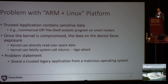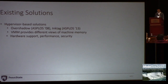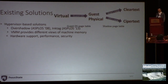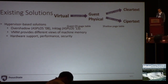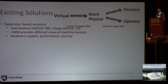To address this problem, many solutions have been proposed to shield applications from a malicious operating system. Existing work mainly focuses on the x86 platform. Solutions such as Overshadow and InkTag take advantage of a virtual memory manager to create different views of physical memory depending on the mode in which the processor is running. When it runs in user space, the application can access the data normally. However, if it runs in kernel space, the kernel can only access encrypted versions of the user data.